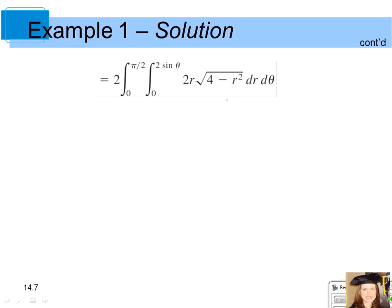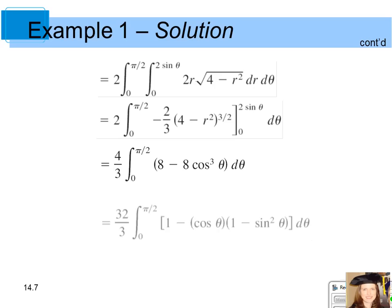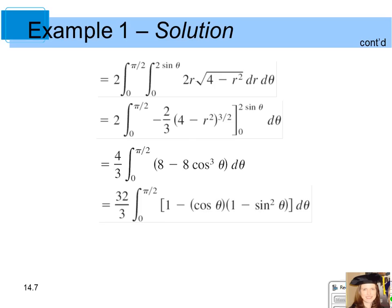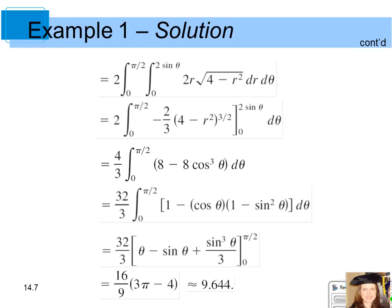When you work it out, take the antiderivative of the inside with respect to z, treating z as the variable and r and theta as constants. Simplifying gives a double integral. When integrating with respect to r, treat theta as a constant, and use u-substitution letting u equal 4 minus r squared so du equals negative 2r dr. This reduces to a single integral, which you can evaluate using power-reducing formulas or a graphing calculator. The exact answer is approximately 9.644.